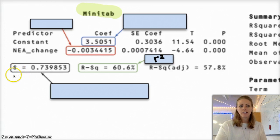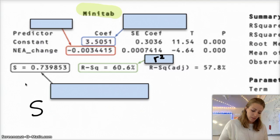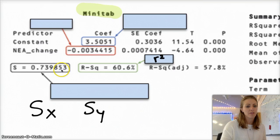This s here, it does not have a subscript. So if you had both an x and a y variable and you had that data, like the standard deviations of those things, it would look like s sub x or s sub y, right? Standard deviation of the x's, standard deviation of the y's. If there is no subscript, that is the standard deviation of the residuals. So s here, 0.739853, is the standard deviation of the residuals.